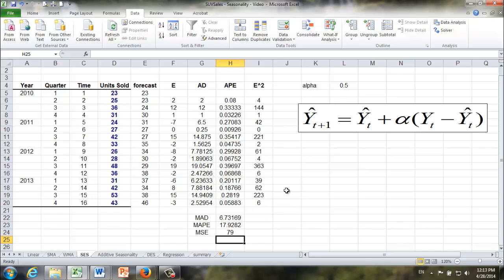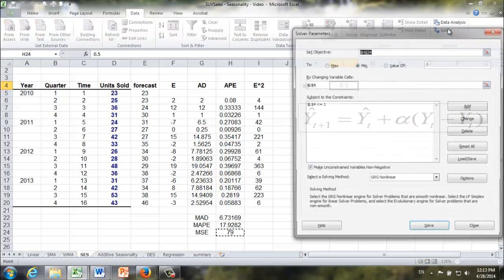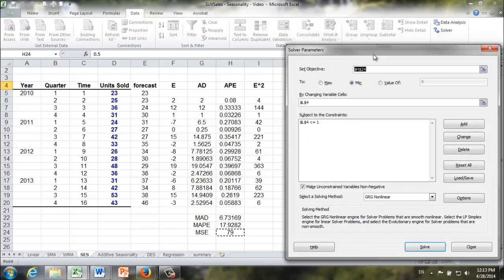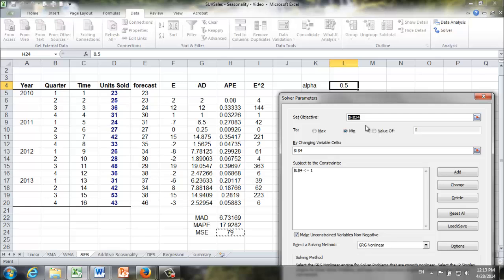Next, we're going to use solver again to find the optimal alpha variable. Data, solver, objective H24, once again, we want to minimize it by changing the alpha variable, which is in cell L4. And what's the requirement of alpha? It's going to be a number less than or equal to 1. Here it is. And we also want to make sure alpha is also not negative.